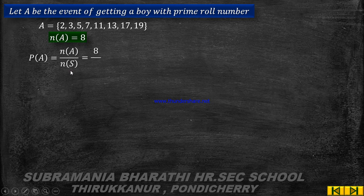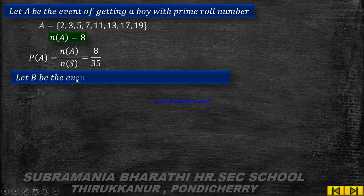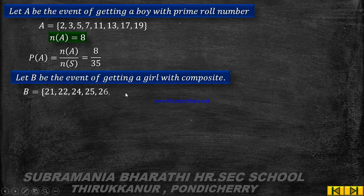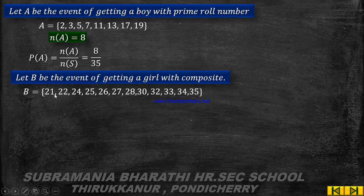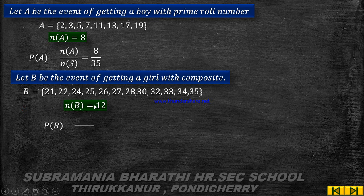Let B be the event of getting a girl with a composite roll number. Girls are numbered 21 to 35. The composite numbers in that range are identified, giving n(B) equals 12. P(B) equals n(B) by n(S), so 12 by 35.